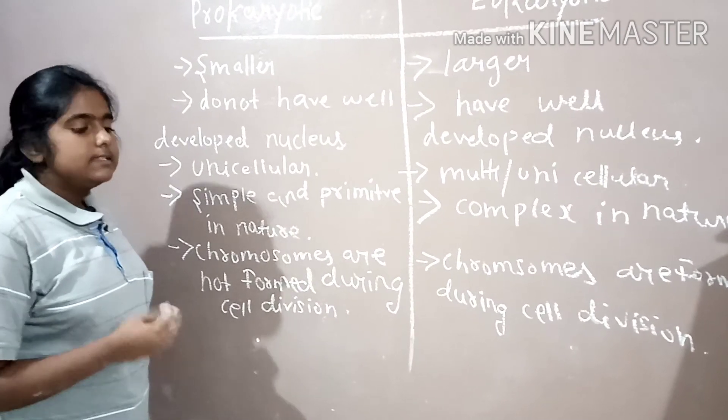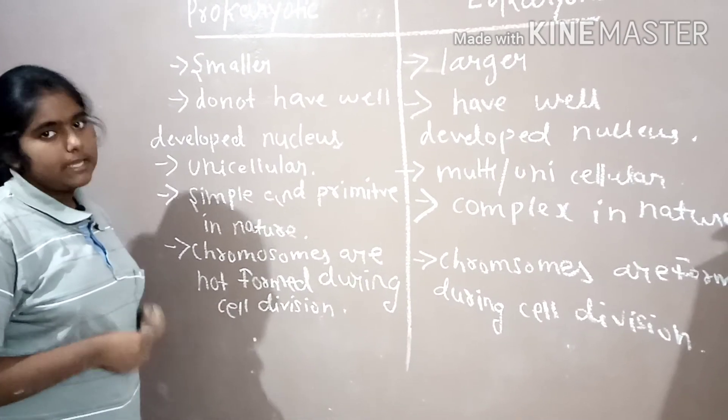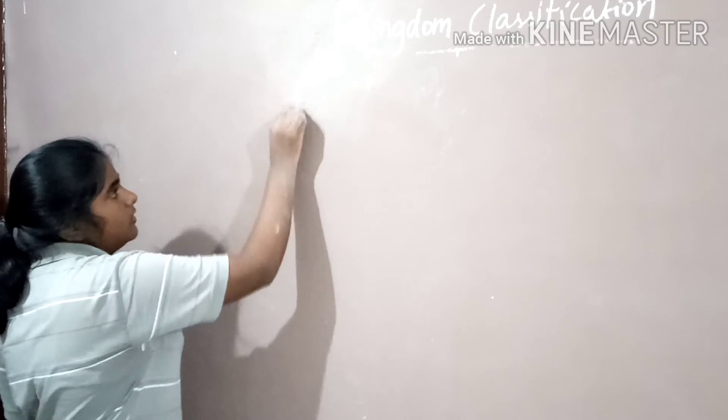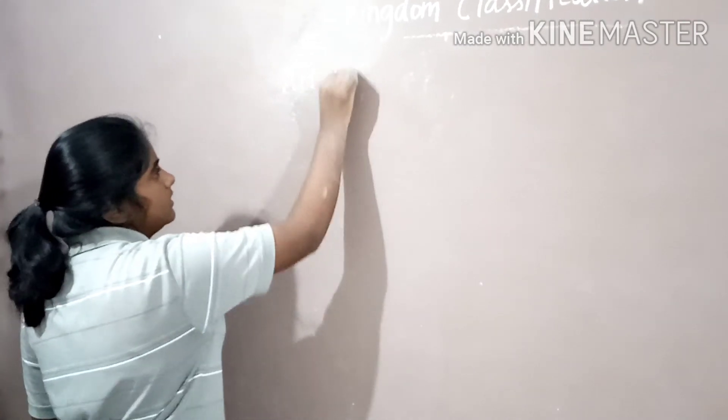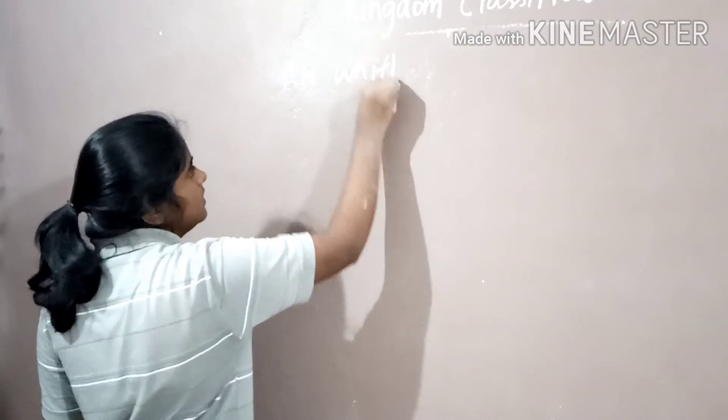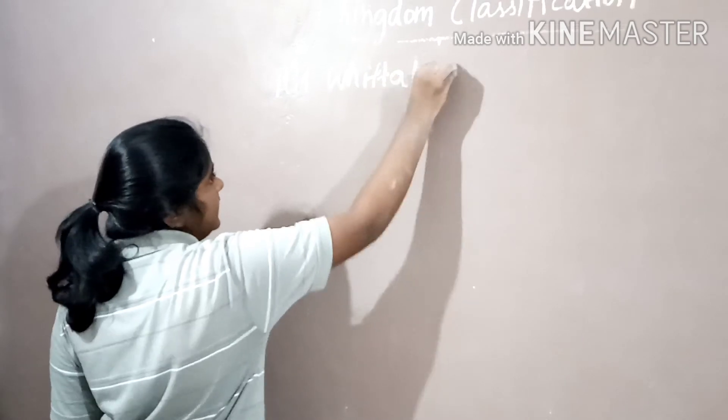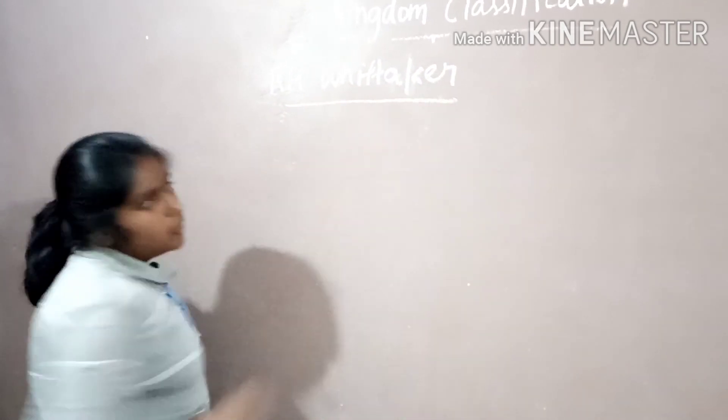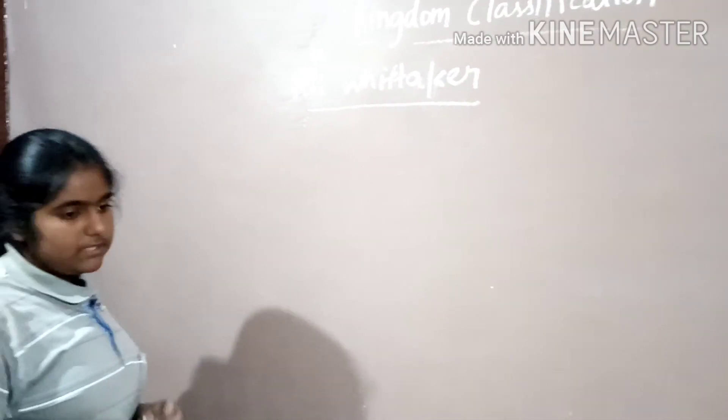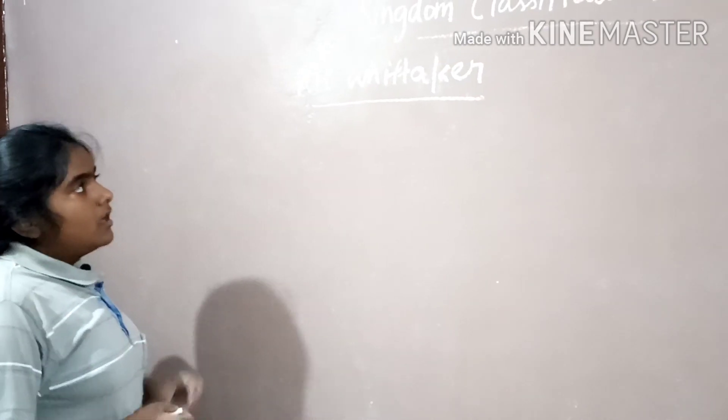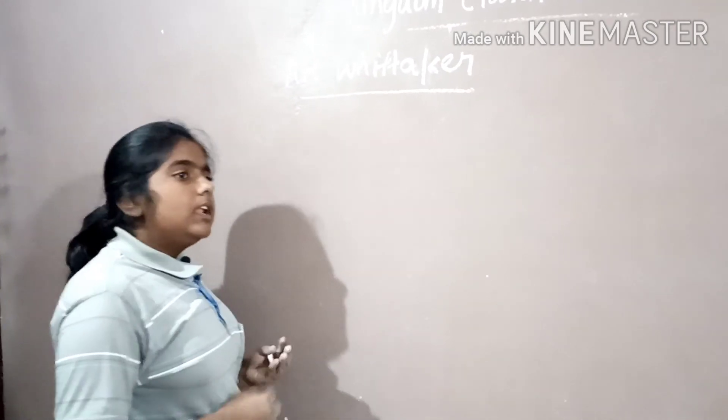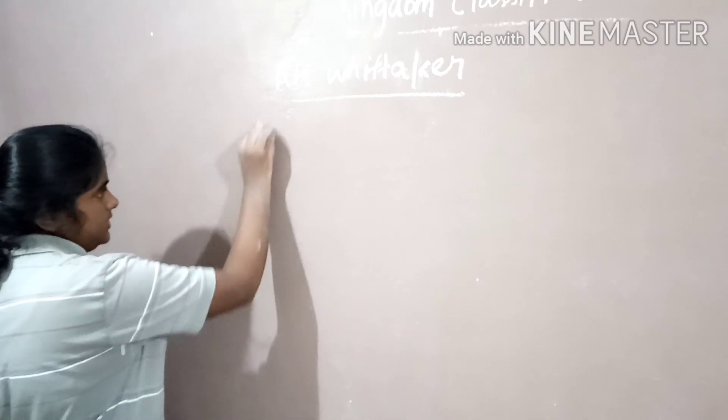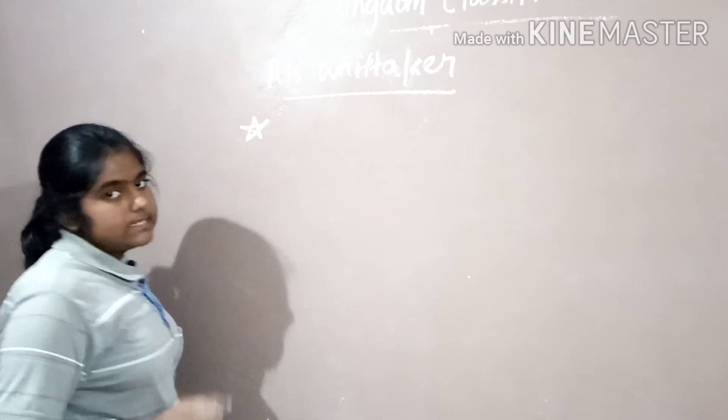Now let us discuss about the five kingdom classification. R.H. Whittaker is a scientist who proposed five kingdom classification. Let us now discuss the names of those five kingdoms.